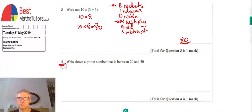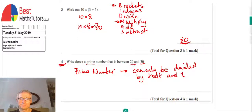Question 4, we've got to write down a prime number that's between 20 and 30. So a prime number is a number that can only be divided by itself and 1. We could start at 20 and say, well, does 20 divide by any other numbers as well as 20 and 1? We can see that 20 we could write as a factor pair. 20 could be 2 times 10, so that means both the 2 and the 10 will go into the 20.